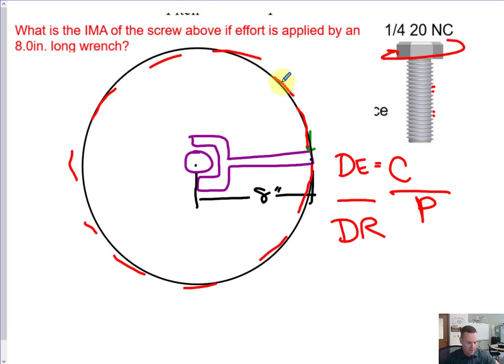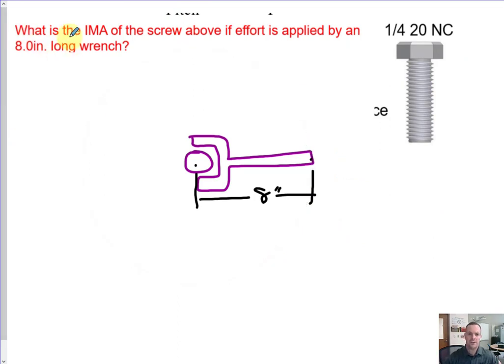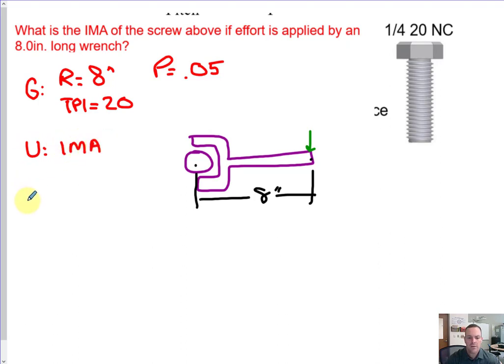In this case, if we back up a little bit, we have our 8 inch long wrench, and we're going to turn it in a circular pattern. So what are some of our givens? Our given here is we know that the radius is 8 inches. We also know the TPI is 20, and we know that the pitch is 1 over 20, or 0.05. The unknown here is IMA. The equation is circumference divided by pitch.